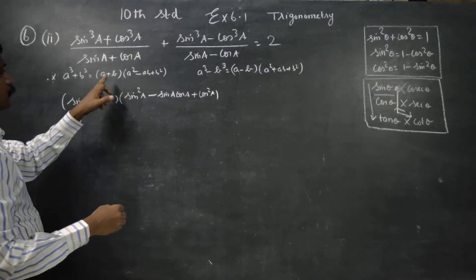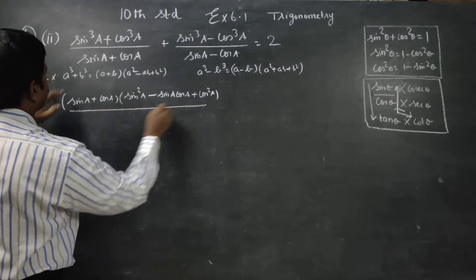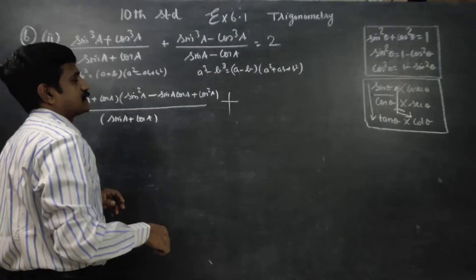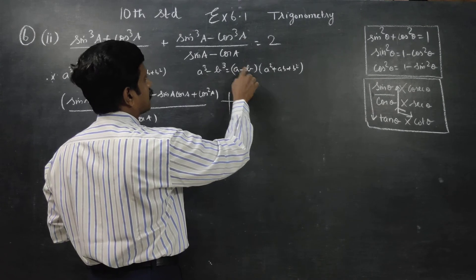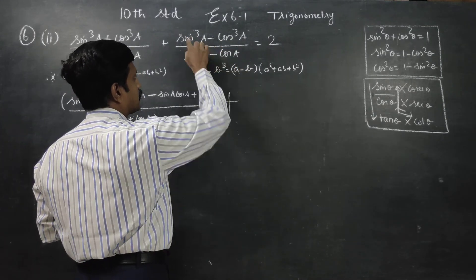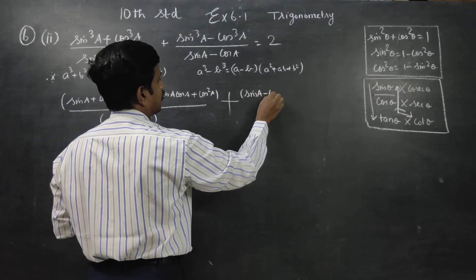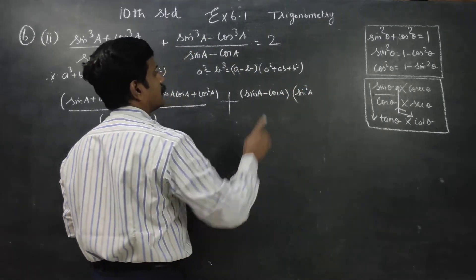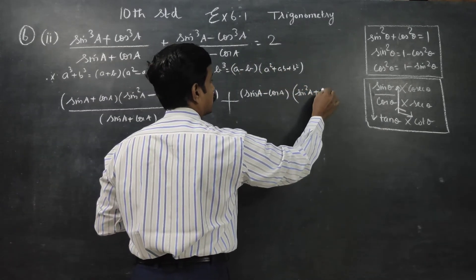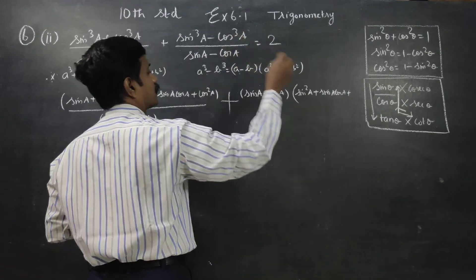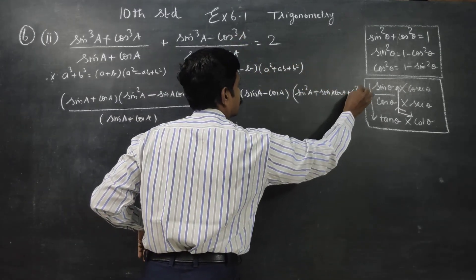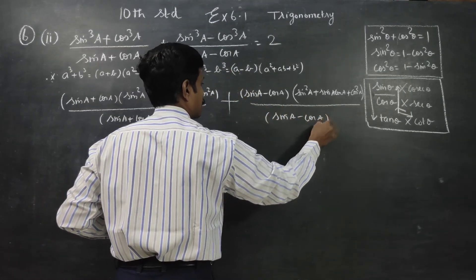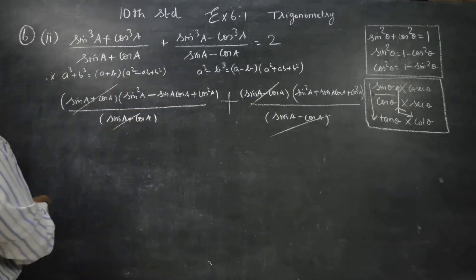a square plus cos square. a minus b: sin a minus cos a. a square: sin square a. a into b: sin a cos a. b square: cos square a. Divided by denominator sin a minus cos a. This is the way to cancel — multiplication a cancel, a cancel.